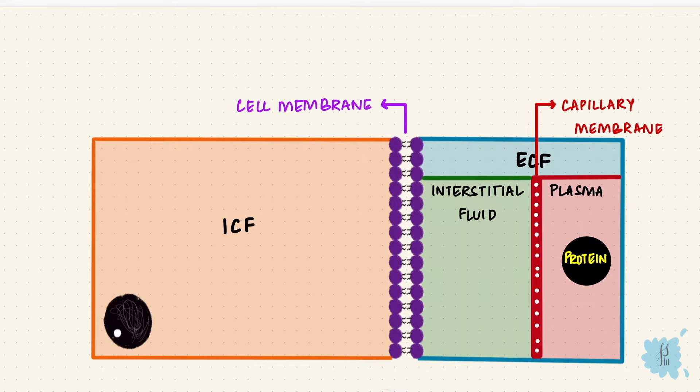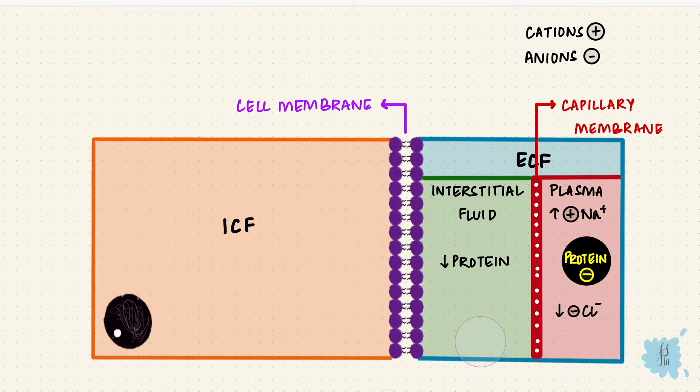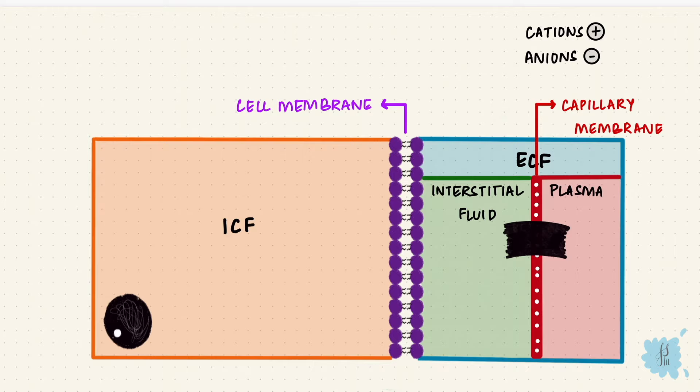Cations are positively charged; anions are negatively charged. Proteins are negatively charged, and because they can't move across the capillary membrane, by the Gibbs-Donnan effect, to maintain balance, the plasma will have more smaller cations like sodium and fewer smaller anions like chloride. But this effect isn't much, so the composition of the two is quite similar, making the predominant cation in the ECF sodium. The predominant anions would be chloride and bicarbonate, along with plasma proteins in the plasma.